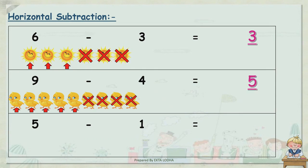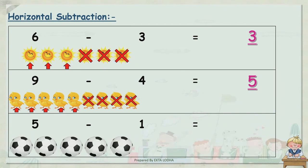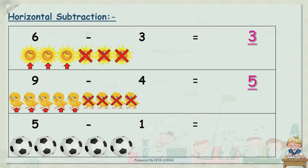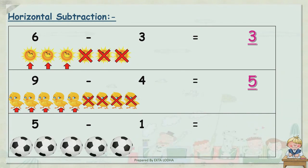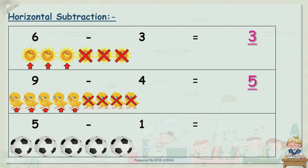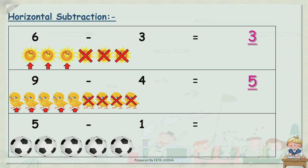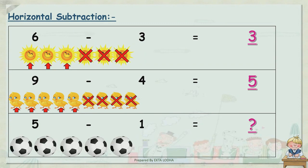Now next one, that is 5 minus 1. Count: 1, 2, 3, 4, and 5 — total 5 balls. We have to subtract 1 from 5. Kids, you have to try this sum at home, so this is your homework. Now let's move forward.